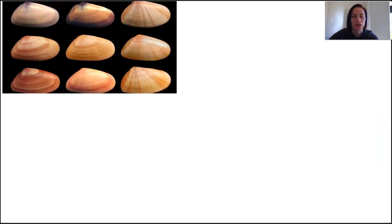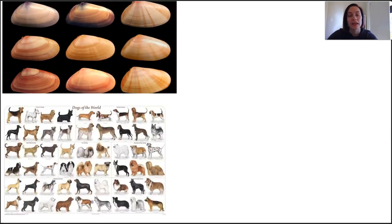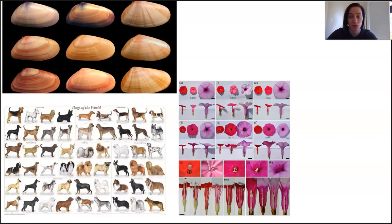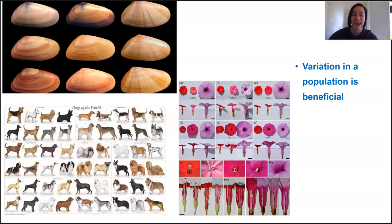We all know from our work in unit three that a population of organisms will show really strong similarities between features, they are the same species after all, but we know that every individual within that population won't be identical because variation exists. Variation is beneficial, it's vital to the long-term stability of the species that allows organisms to withstand and survive sudden changes which may arrive in the environment.